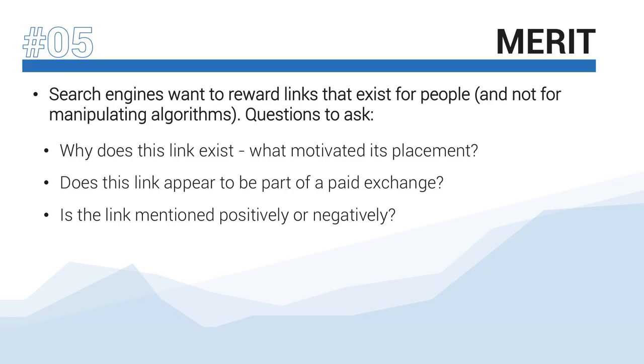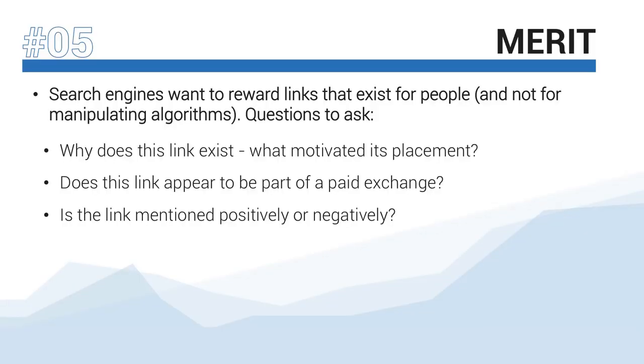Questions to ask when assessing merit include: why does this link exist, and what motivated its placement? This is where you assess whether the link was awarded based on value to the user or some other authentic reason. Does this link appear to be part of a paid exchange, such as a website purchasing placement for a monthly fee? If clearly part of a paid exchange, the search engine would want to dilute the SEO value, since the endorsement is based on money changing hands rather than page quality. When a paid relationship is in place, search engines ask for a special tag in the HTML called the nofollow tag. Determining whether a link is part of a paid relationship is a tricky undertaking for a search engine and a subject of much debate in the SEO community. Several websites have landed in deep trouble by overtly purchasing links to manipulate their rankings and getting caught for it.